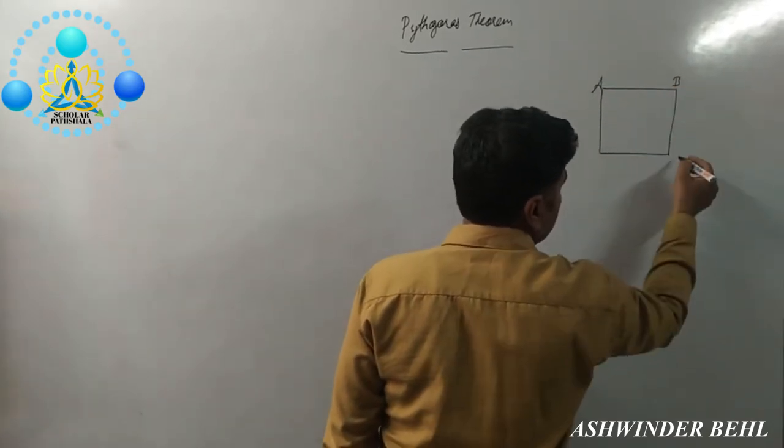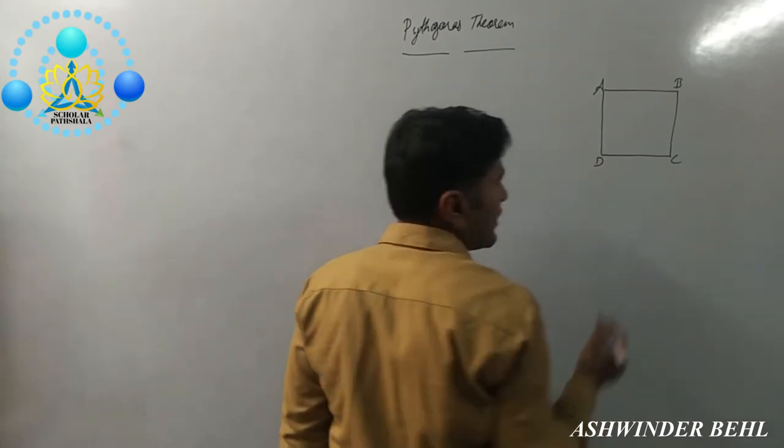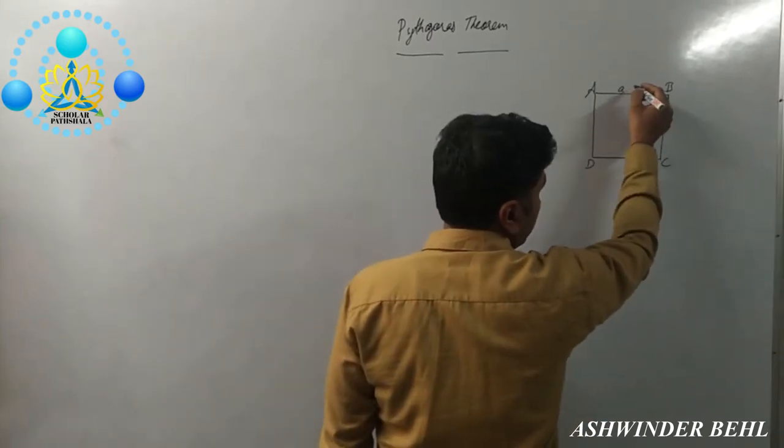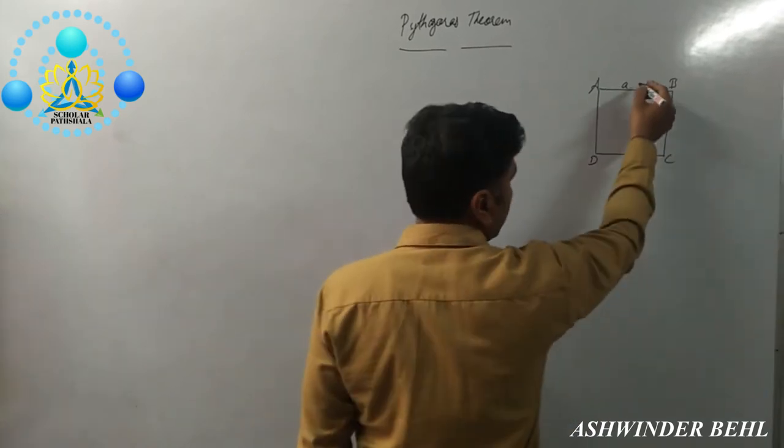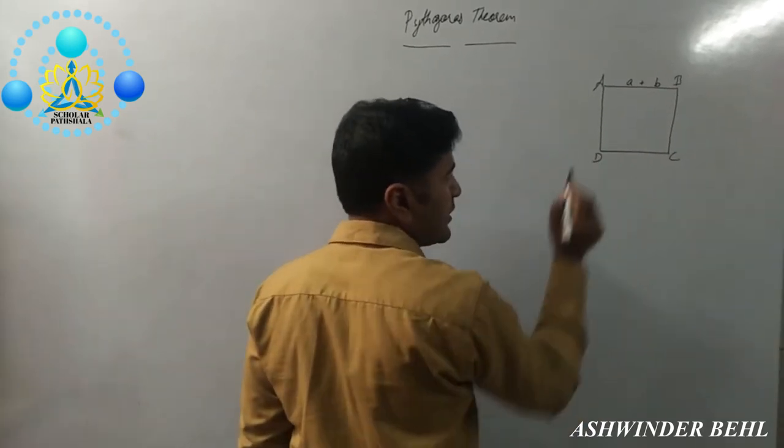That is A, B, C, D with side of A plus B. We can write down here A plus B.